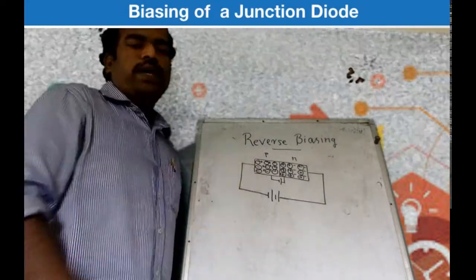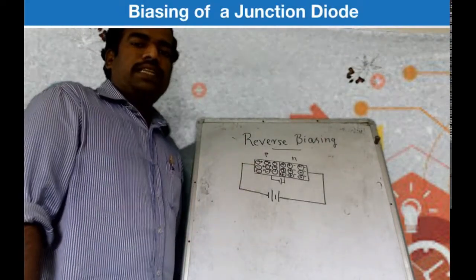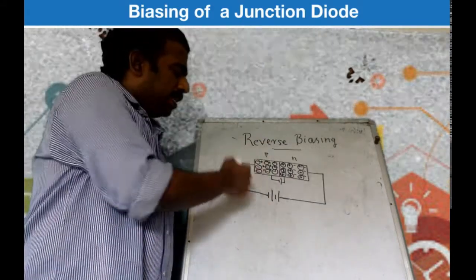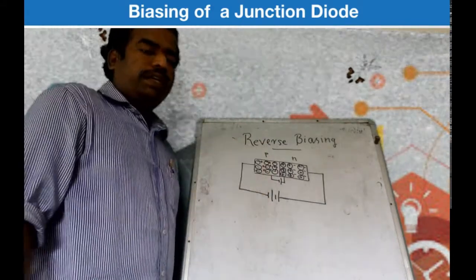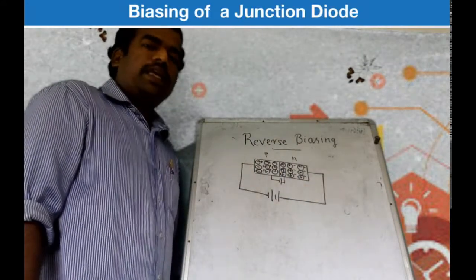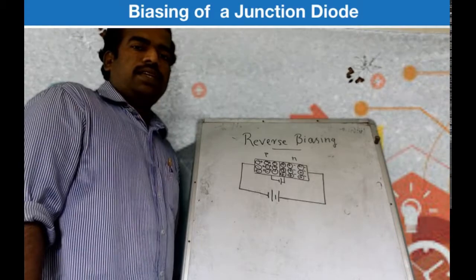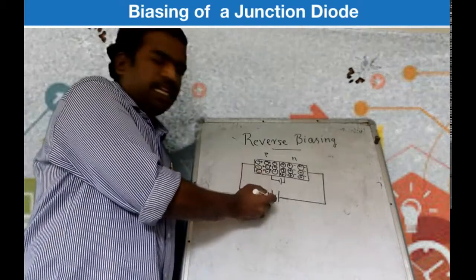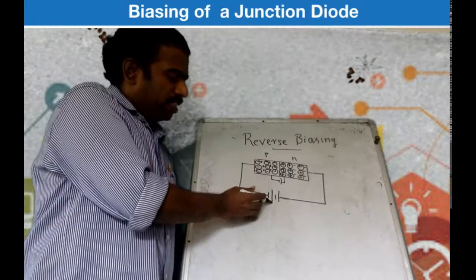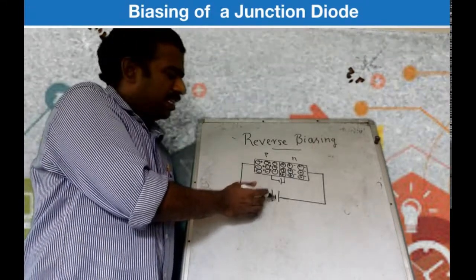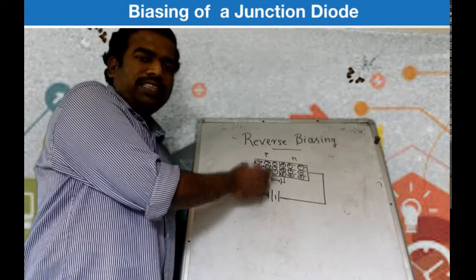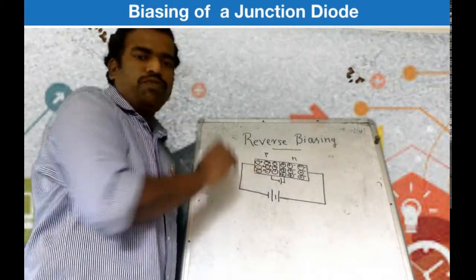We will learn reverse biasing of the diode. The direction of the reverse voltage is similar to the internal potential barrier field direction.